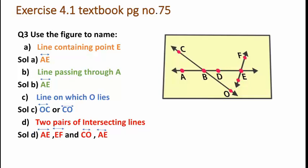Now let us find the intersecting lines. You can see on the figure that line AE is intersected with line EF at point E. This is your first pair of intersecting lines.